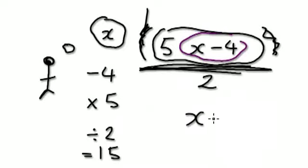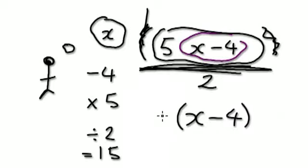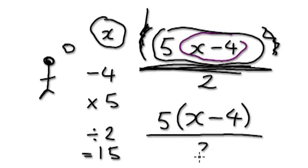I'm thinking of a number. I'm going to take away 4, then multiply it by 5, then divide it by 2. So the equation should be like this, and it equals 15.